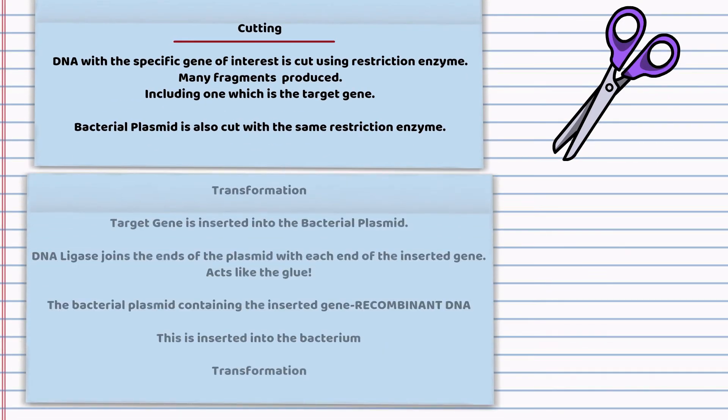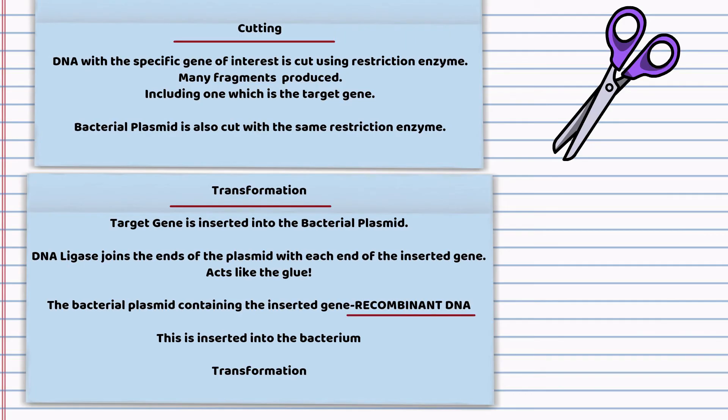Next stage is Transformation. The target gene is inserted into the bacterial plasmid and the enzyme DNA ligase joins up the plasmid ends. It's acting like the glue. The bacterial plasmid is now termed as recombinant DNA and this is inserted into the bacterium. This is transformation.